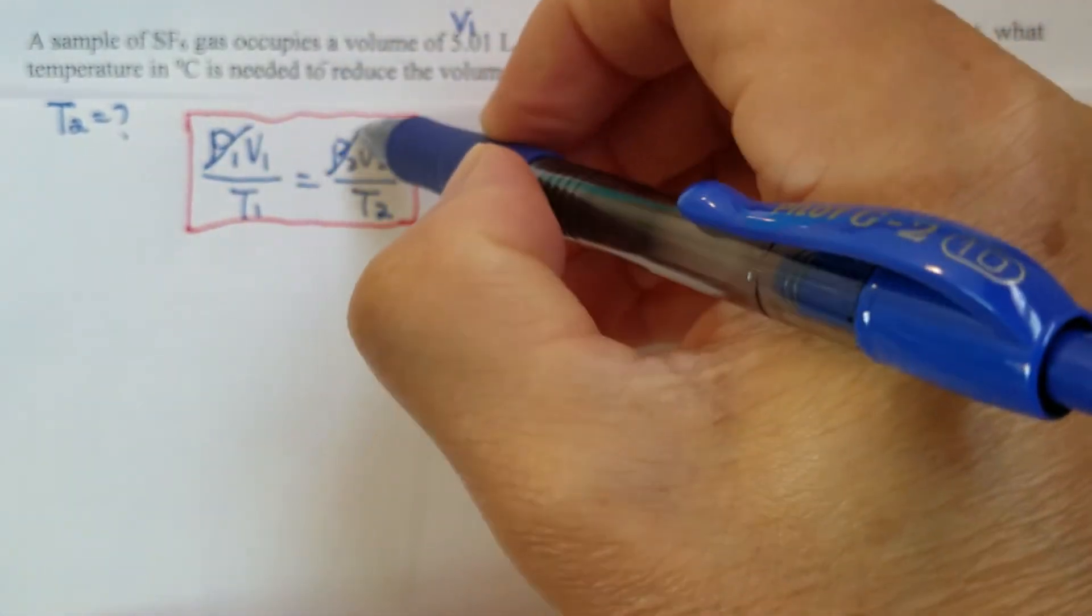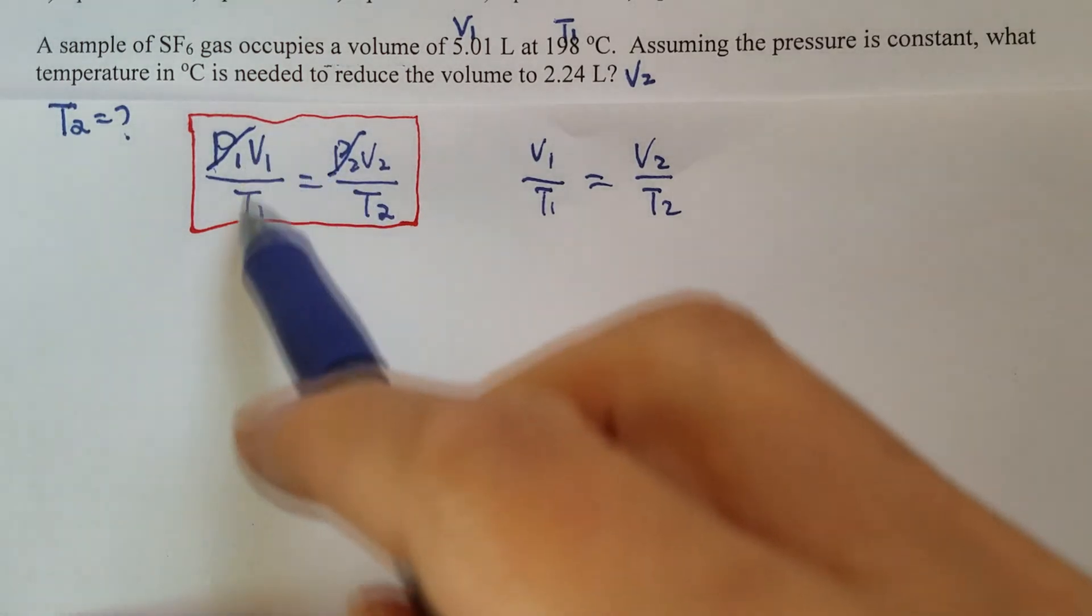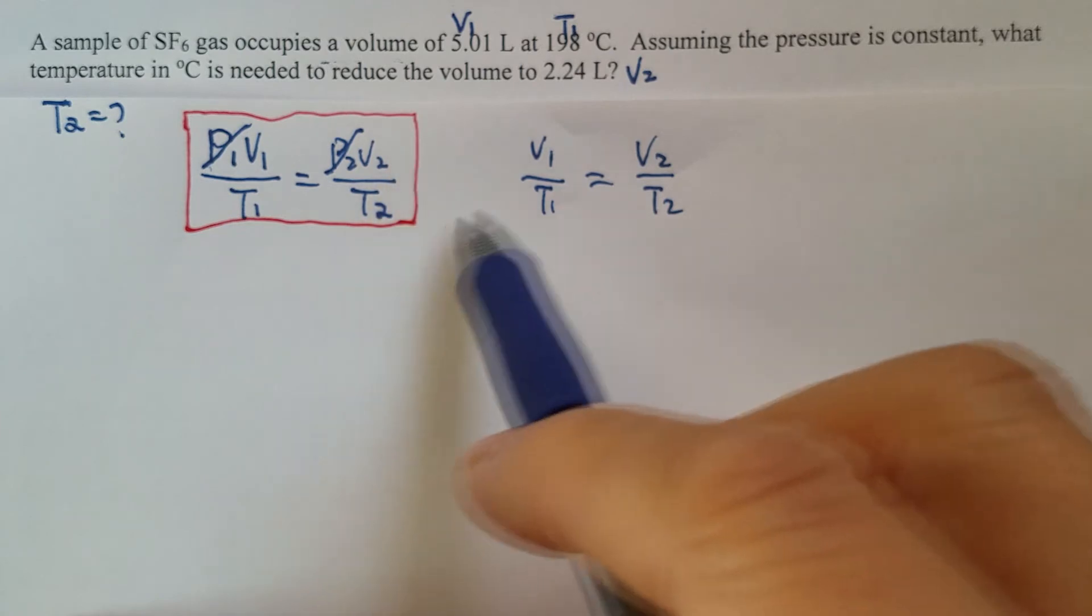So therefore, P1, P2, they are the same. Then you will get this Charles law equation. V1 over T1 equals V2 over T2.